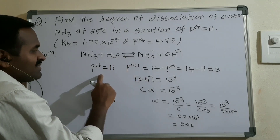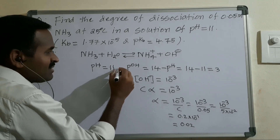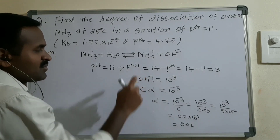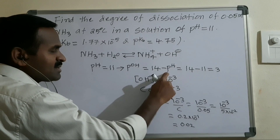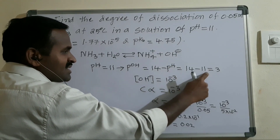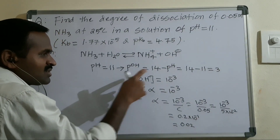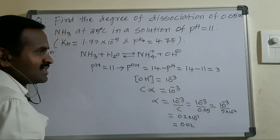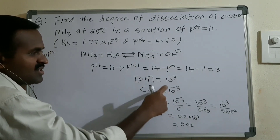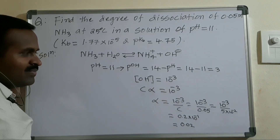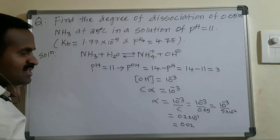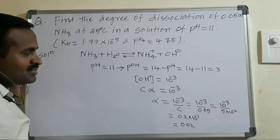Since pH is given as 11, we find POH: POH = 14 − pH = 14 − 11 = 3. From POH = 3, we get OH⁻ ion concentration = 10⁻³.